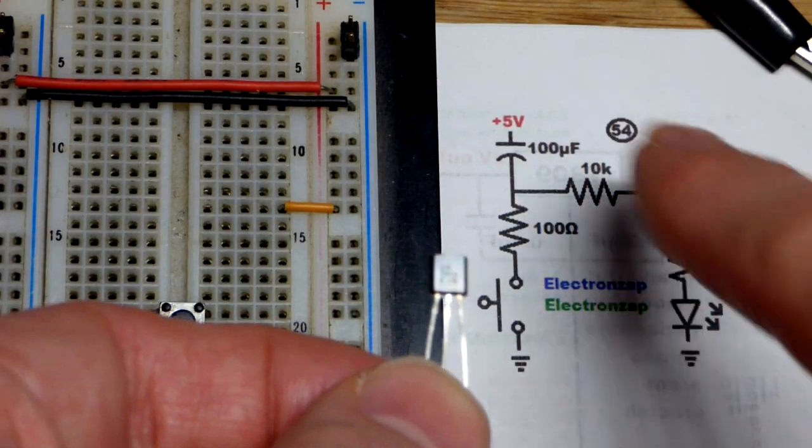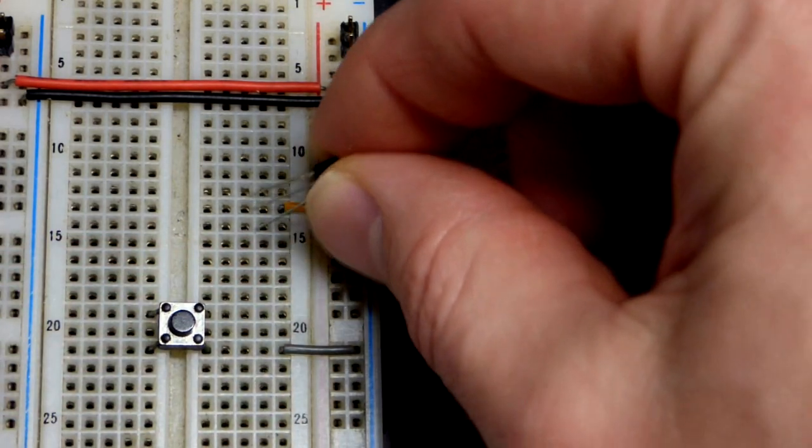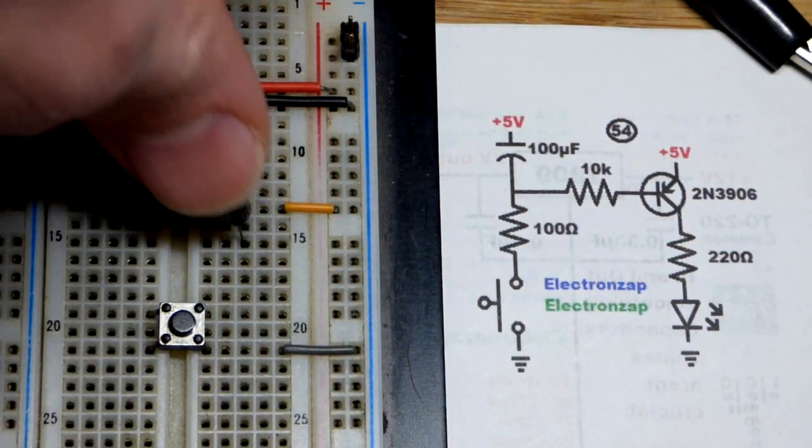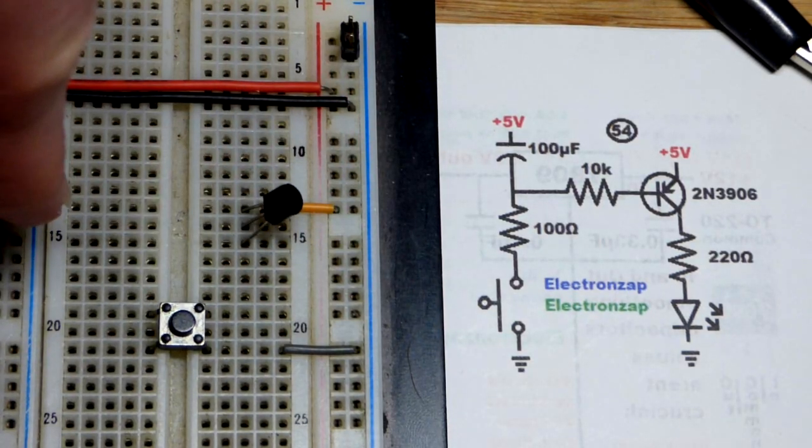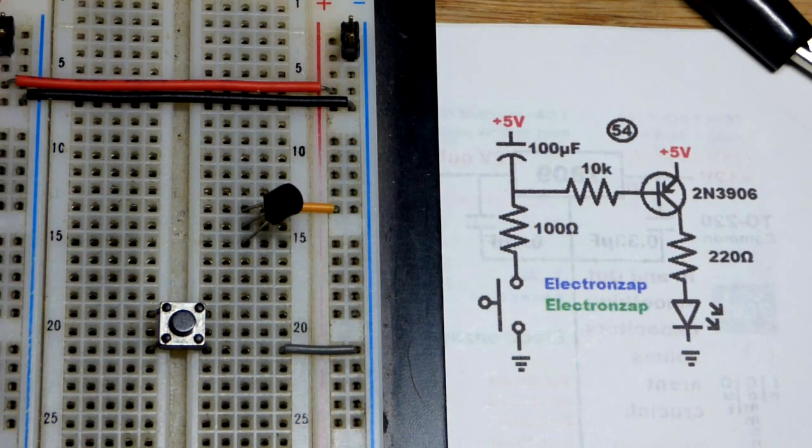So, there you can see emitter goes to the positive supply, which I have up higher, so I'm going to wire it that way. Just keep things simple, right there. I swiveled it, the flat side to the left over there, making the emitter the top pin.